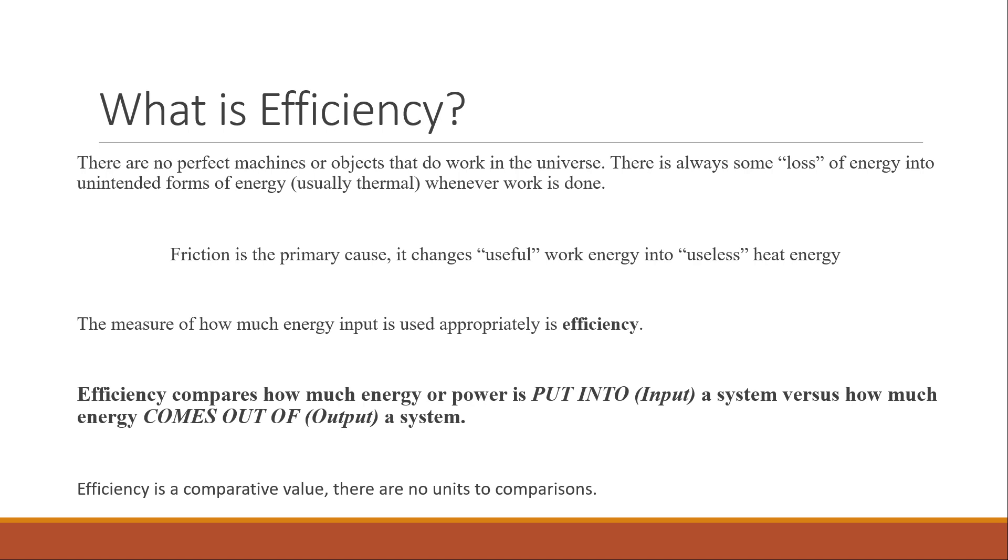So what is efficiency and why do we care? Because there's no such thing as a perfect machine or an object that does work in the universe that does it perfectly as intended. There's always some loss of energy into unintended forms of energy. Usually it's thermal. Friction is usually the number one cause of turning whatever useful work energy into useless heat energy. So it's not that energy is lost so much as energy is turned into a form that we didn't want.